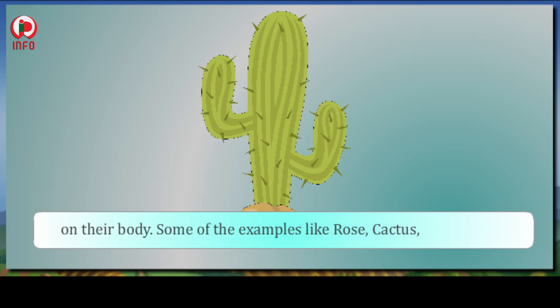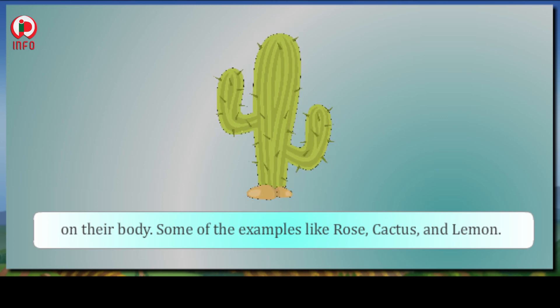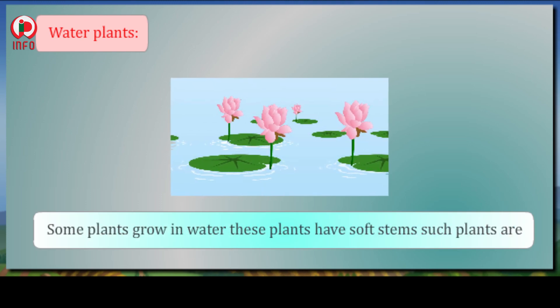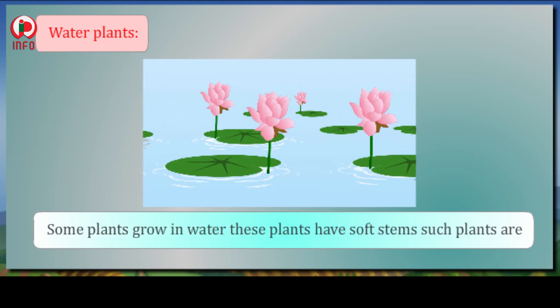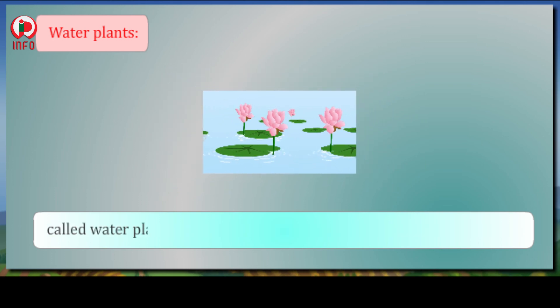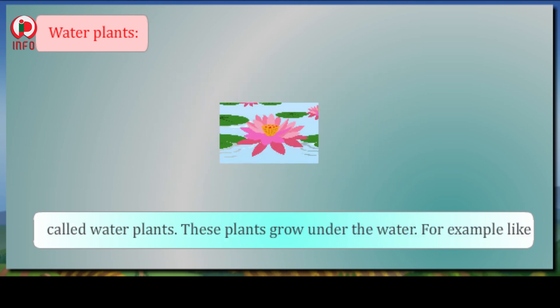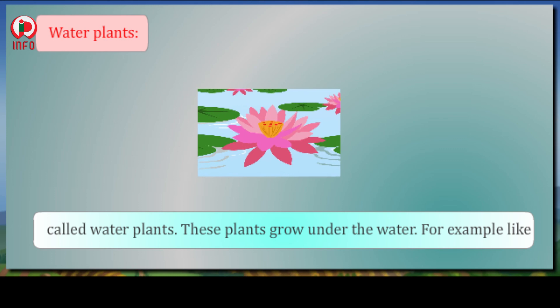Water plants: Some plants grow in water. These plants have soft stems. Such plants are called water plants. These plants grow under the water. Examples: lotus and water lily.